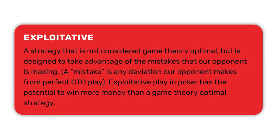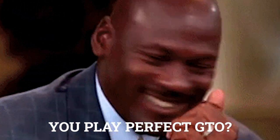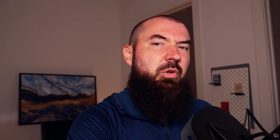By always choosing paper you would no longer be playing a game theory optimal strategy — instead you'd be implementing an exploitative strategy. This is where you can see a real comparison to poker, where there is a massive opportunity to make more money by playing exploitatively and taking advantage of mistakes your opponents are making. Because our opponents are not GTO perfect — no human can implement it perfectly, no matter what they claim.